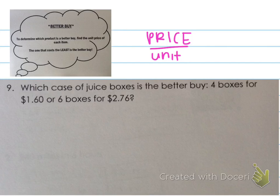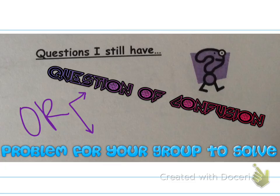For this last problem, I want you to do this one completely on your own. Remember, when you set up your ratios, write the price as the numerator and the unit as the denominator. Then find the unit price — the one that costs the least per unit is the better buy. Go ahead and do this one on your own; we'll check it in class. Once you finish that, remember we still have the section on questions where you either need to write a question of confusion or a problem for your group to solve. Make sure you get that done, and we will see you in class very soon.